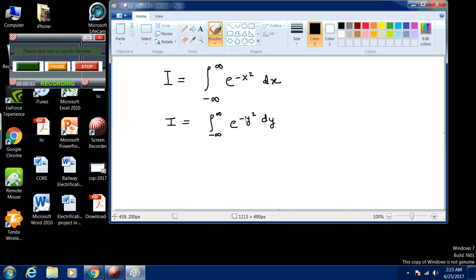We just change the variable x to y. Now just multiply these two equations and you get I squared equals double integral minus infinity to plus infinity e raised to the power minus x squared plus y squared dx dy. Now we change the variables.